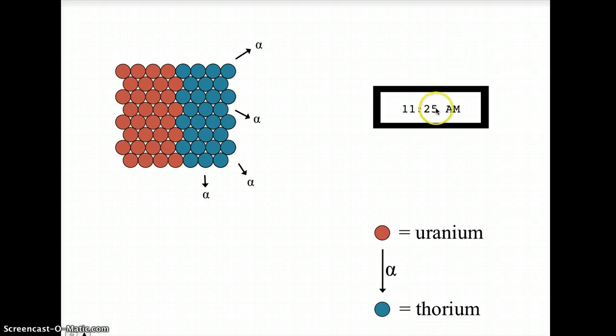If we let five more minutes pass, then half of the remaining uranium, half of the red that's left, turns into thorium. They transmute. And if we wait five more minutes, then in that amount of time, half of what was remaining will have changed into thorium.